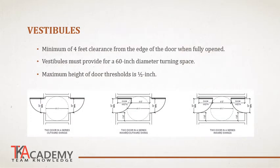Along an accessible route transitioning from outside to inside, there's a good chance you'll have a vestibule, and there are specific clearances that must be met. If a doorway swings inward into the vestibule, you must maintain a minimum clearance of 4 feet in front of that door when it is fully open — 4 feet clear before any other obstruction. All vestibules must maintain a 60-inch diameter turning space so someone in a wheelchair can completely turn around and change directions. Since vestibules transition from outside to inside, there is usually a door threshold, and the maximum height of that threshold is one-half inch.